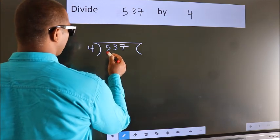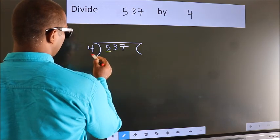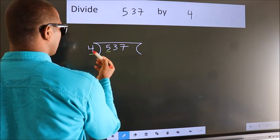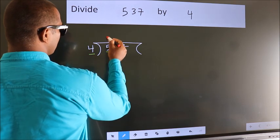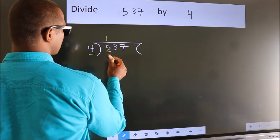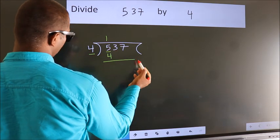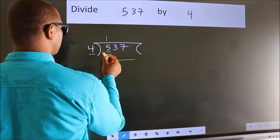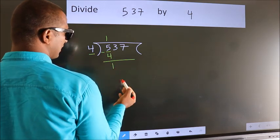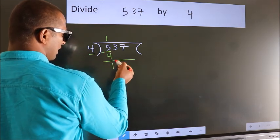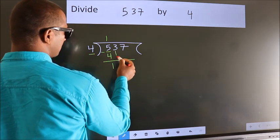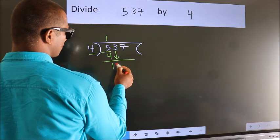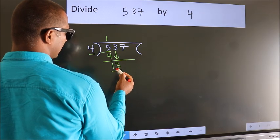Here we have 5, here 4. A number close to 5 in the 4 table is 4 once 4. Now we should subtract — we get 1. After this, bring down the beside number. So, 3 down. So, 13.